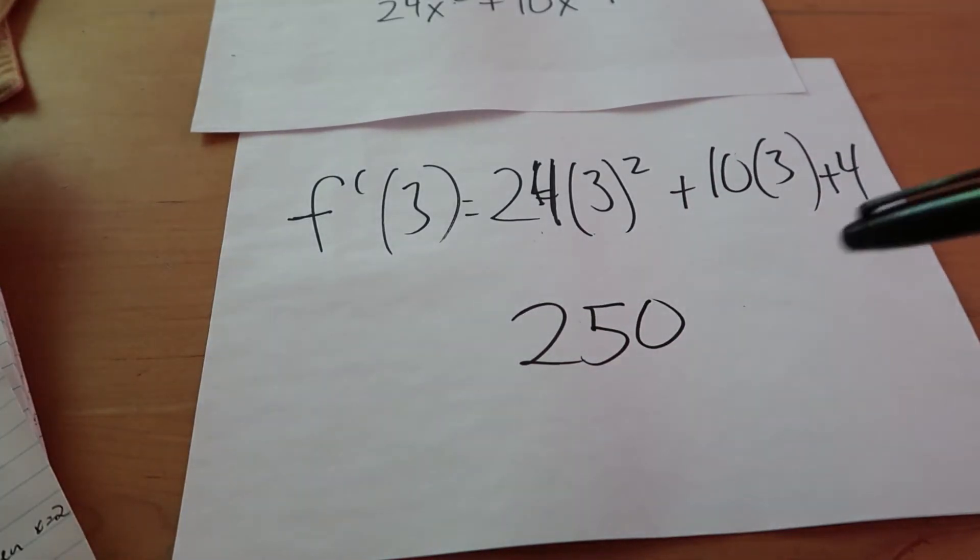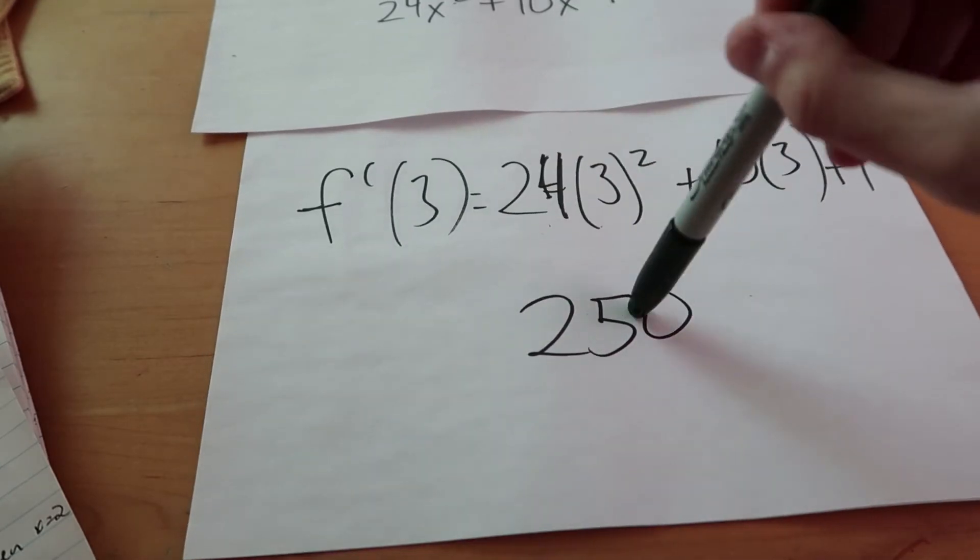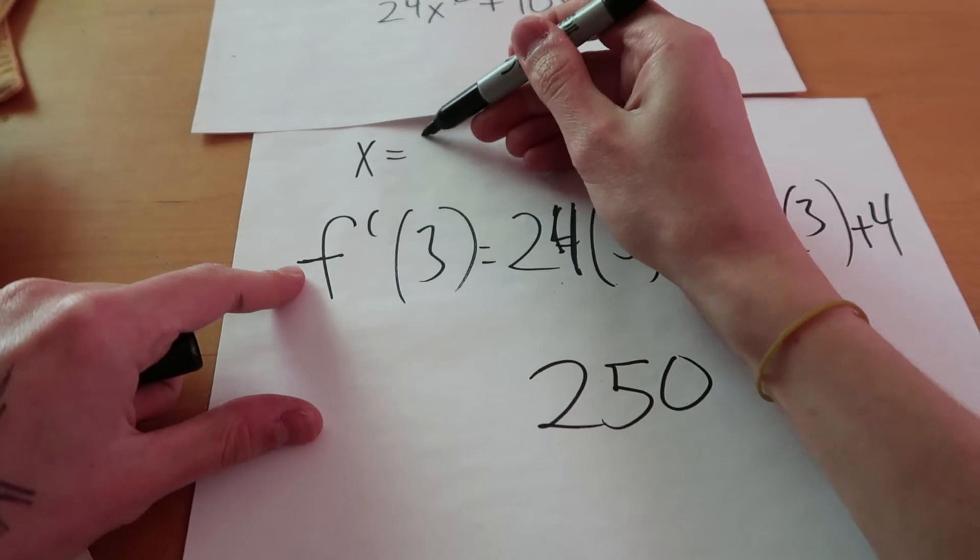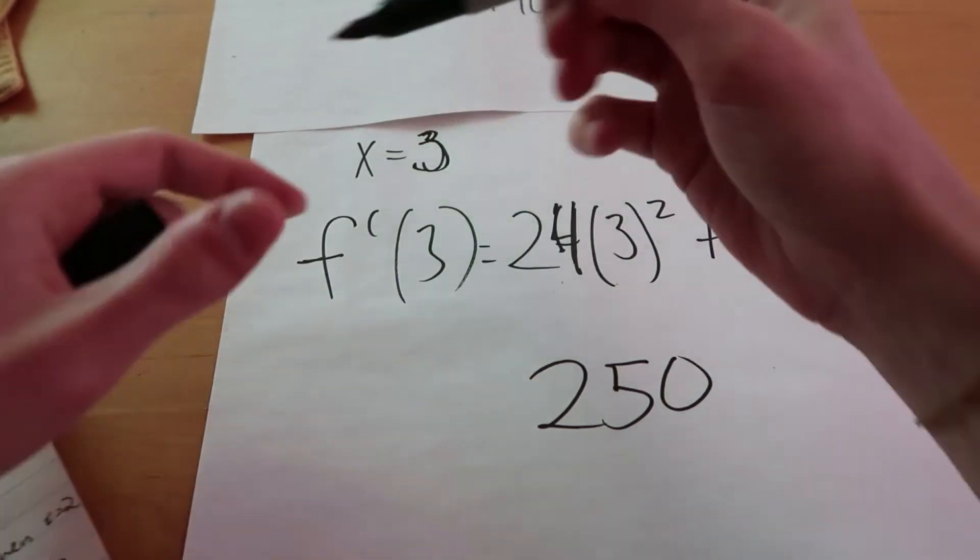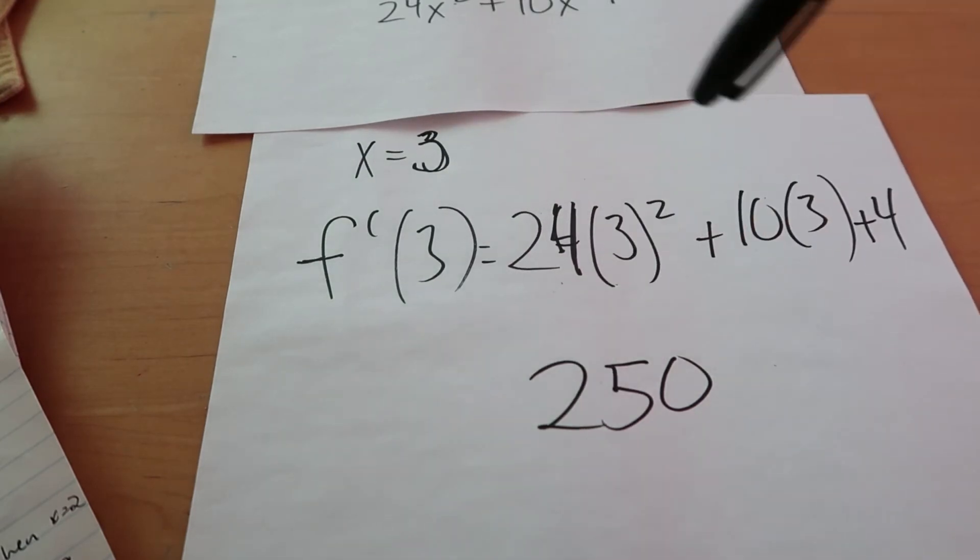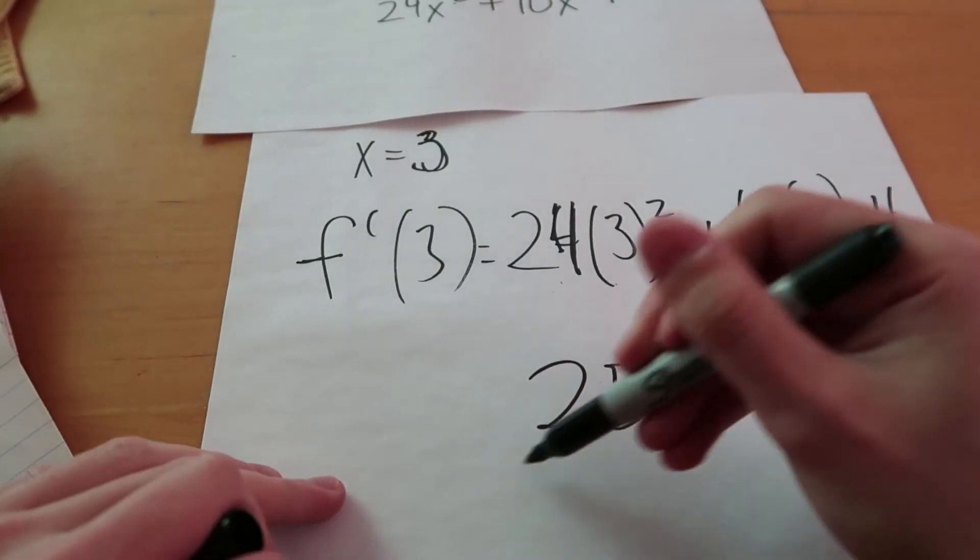Now, this tells us that the rate of change of y with respect to x is 250 if x is 3. So if x is 3, the rate of change of y with respect to it is 250. So now let's go ahead and do this in PyTorch and see if we can get this same result here.